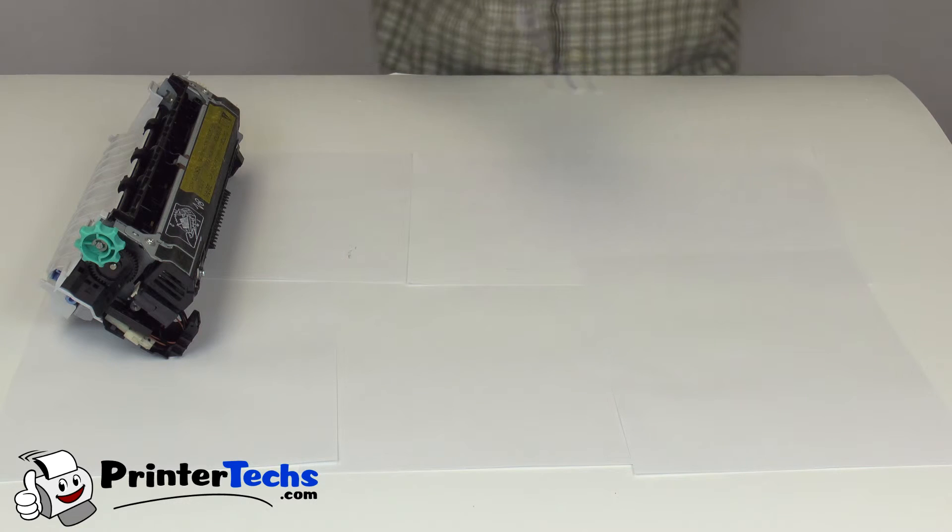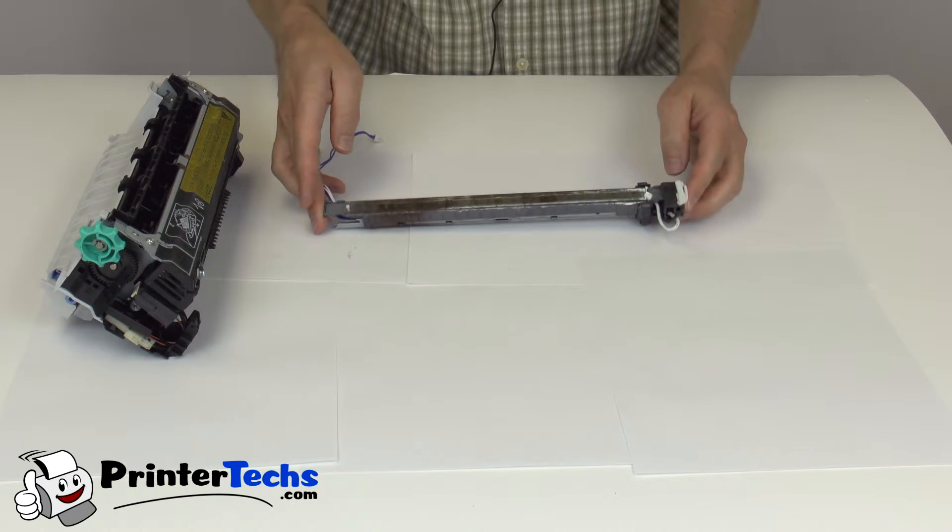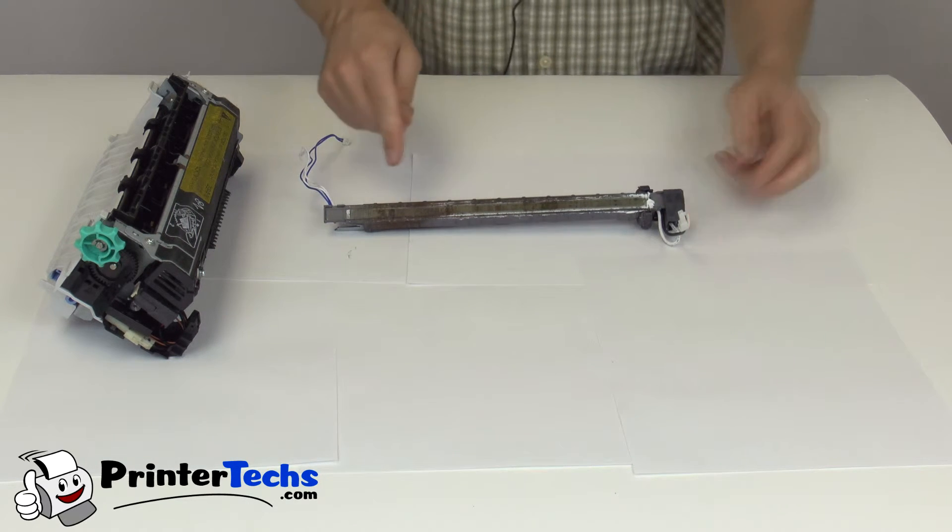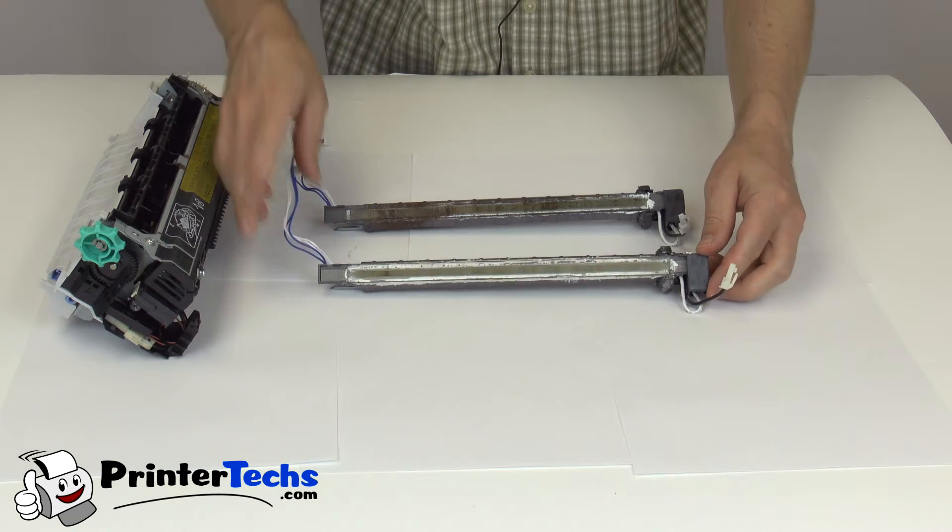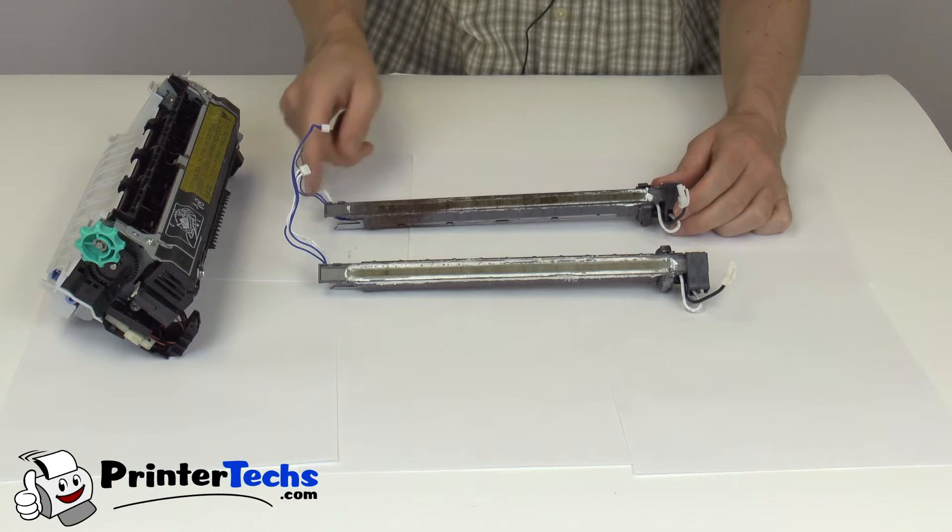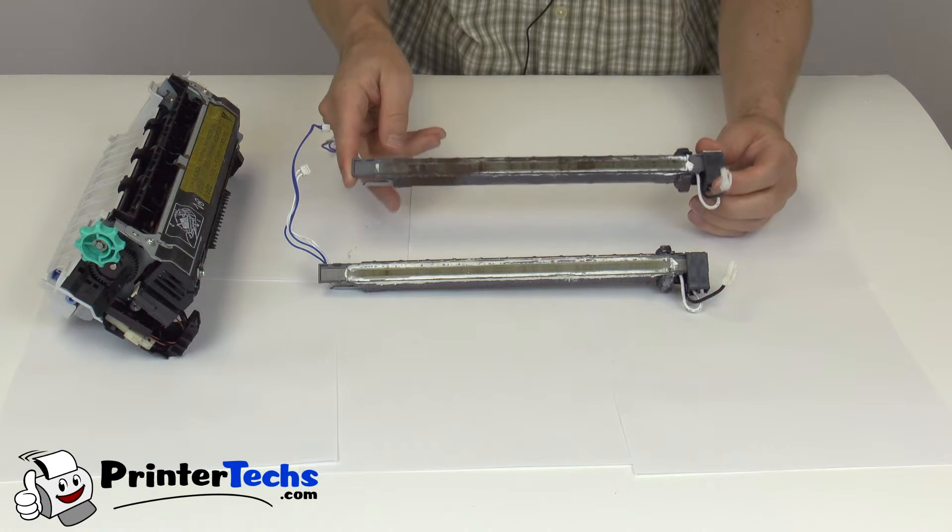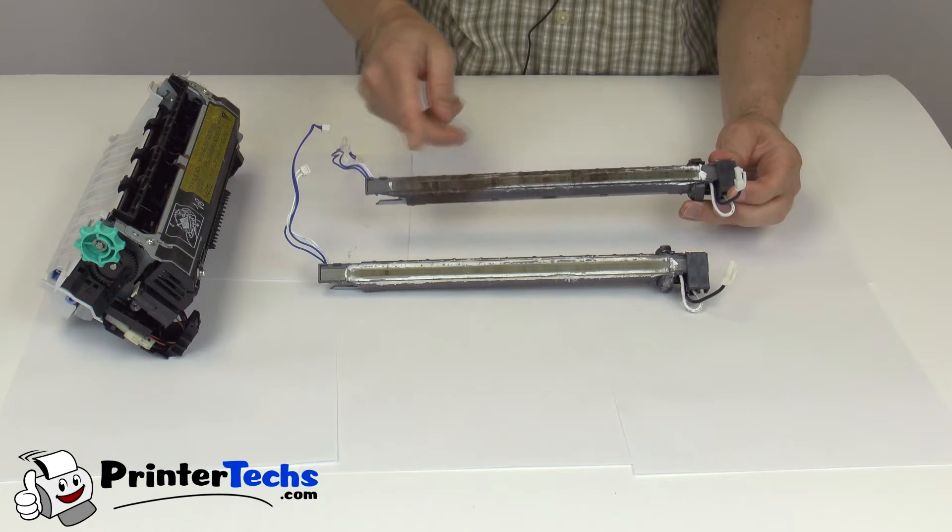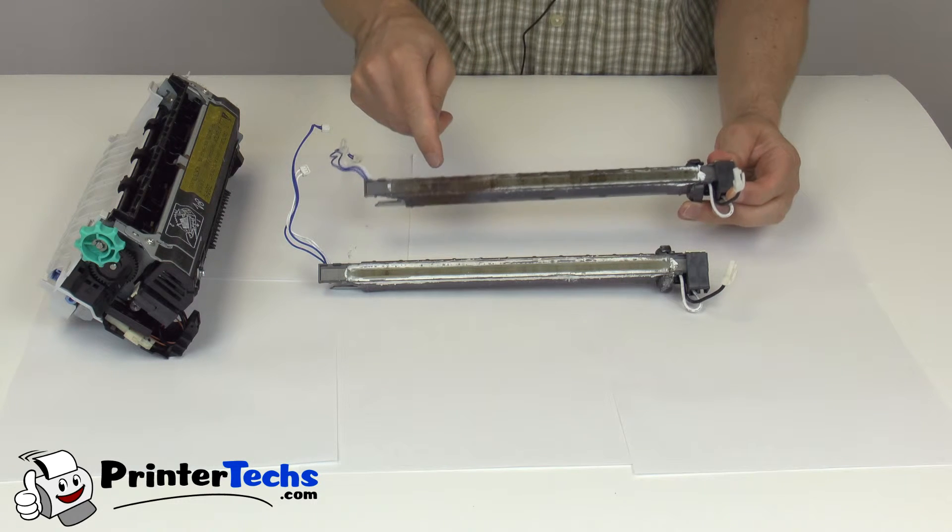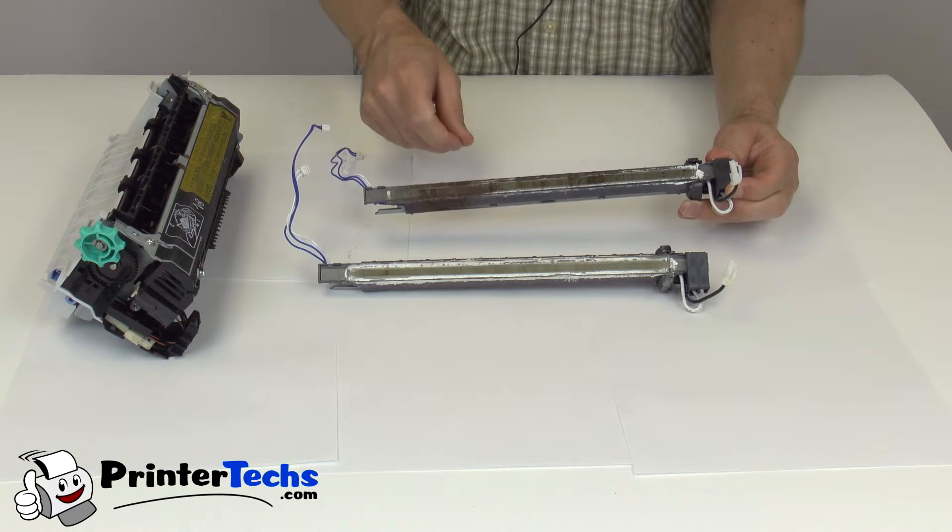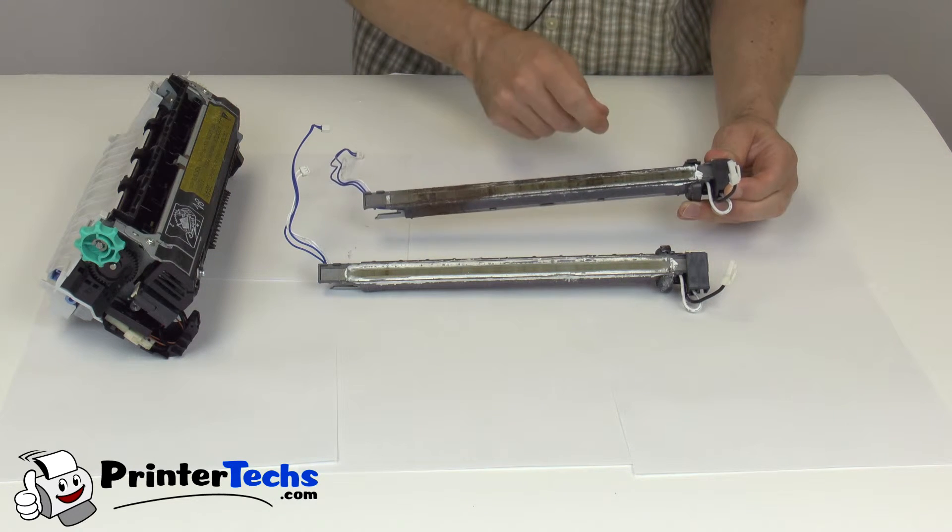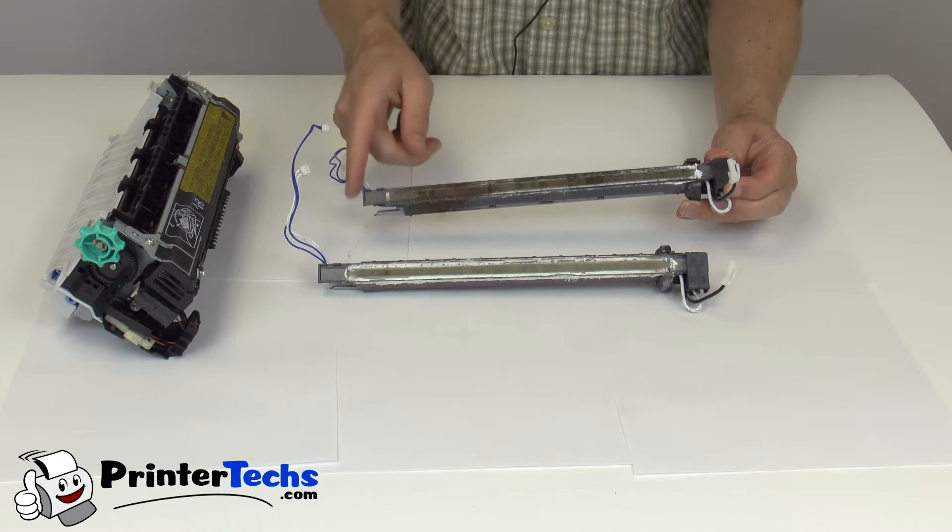Because if it's too thick, you're going to have issues with bonding toner to heavy media. The other thing is the heating element in the fusers. Here's an actual heating element from a fuser. You can see this is a genuine HP heating element with grease that has failed. See this brown stuff all over the surface? That was white grease, and you can see it has failed.